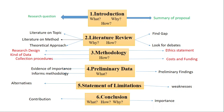So this is the flowchart for a research proposal. You need to follow these steps: introduction, literature review, methodology, preliminary data, statement of limitations, and finally the conclusion. You also have to keep in mind the different elements and factors of each section, and answer the what, how, and why of each and every section. Hopefully this video will help you in preparing an excellent research proposal for your research project.